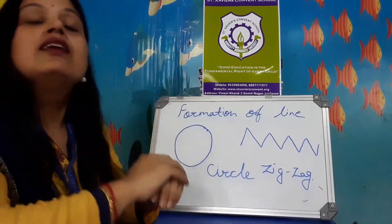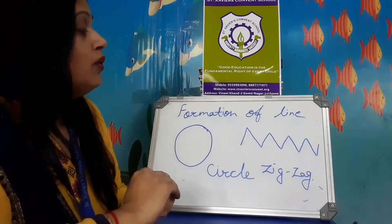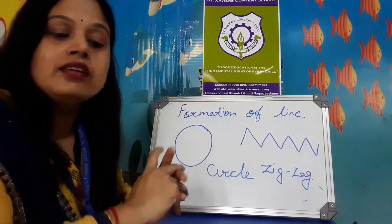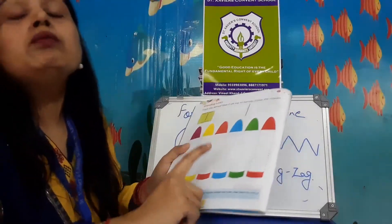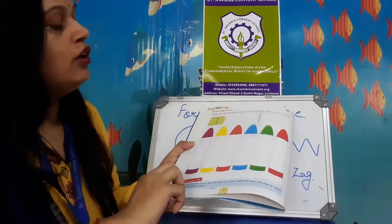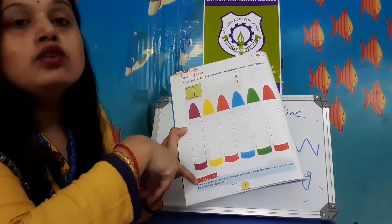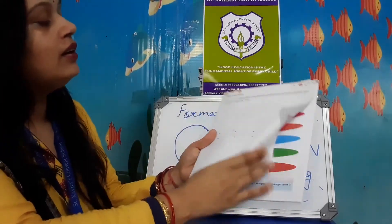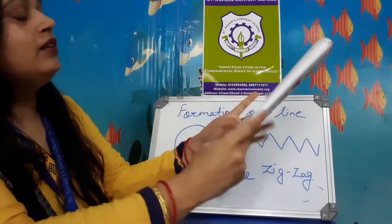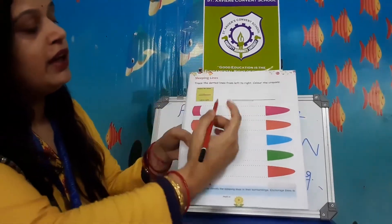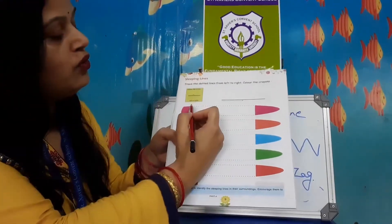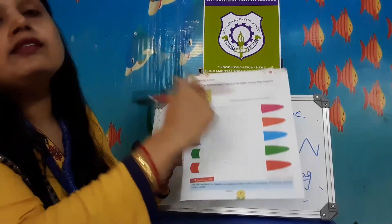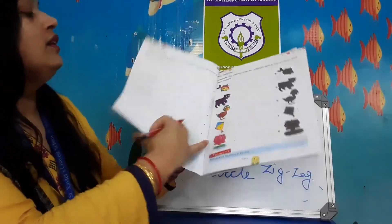These are the lines, and if you make alphabet letters, these lines help you. Now, this is your pattern book. First, this is the standing line — you have to draw it and join the dots. After that, sleeping line — look here, trace the dot like this. This is a sleeping line.